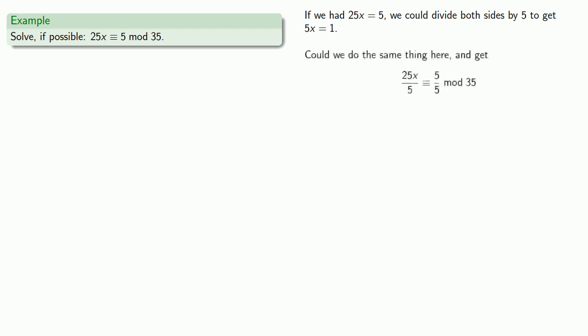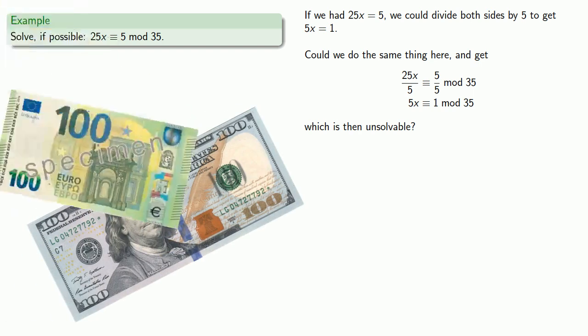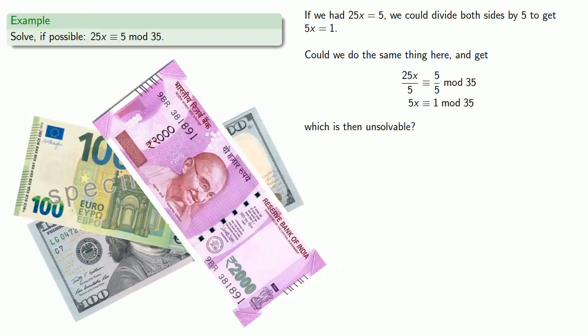Could we do the same thing here, and get 25X over 5 congruent to 5 over 5, which is the same as 5X congruent to 1 mod 35, and then conclude that this is unsolvable? Well, maybe. Here's a good gauge of whether or not we should stop here. Are you willing to throw money down on the table and lose it if you're not right? If you have the slightest hesitation, there's probably more to this problem.